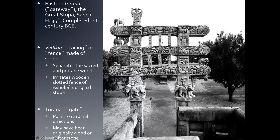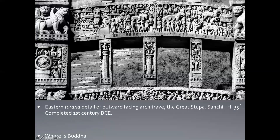The torana is a gate pointing to the cardinal directions. A torana detail shows the Buddha represented multiple times — not as a person, but through icons: the Wheel of Law, the lions, the lion capital, the Bodhi tree (under which Buddha meditated when first reaching enlightenment), and riderless horses. All of these represent Buddhist ideas and the ideals of the Buddha without depicting him physically.